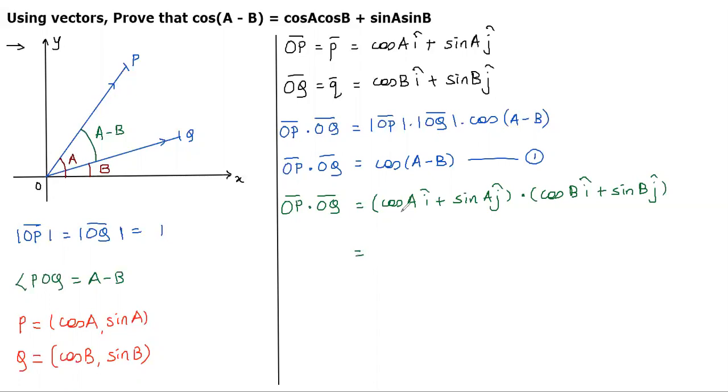The coefficient of i cap here is cosA, here it is cosB. So, I got it as cosA × cosB. By the way, i cap · i cap = 1, and i cap · j cap = 0.